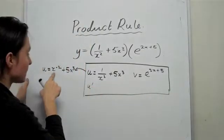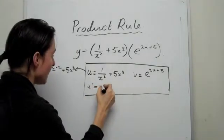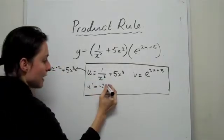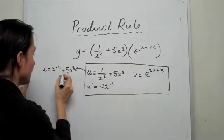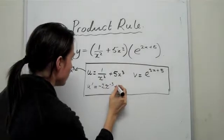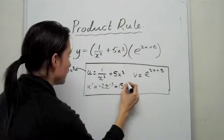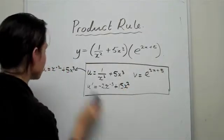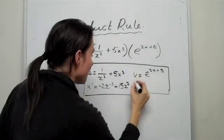So U dash is going to be the derivative of this stuff. So it's going to become minus 2, minus 2X to the minus 3, because you've reduced it by 1. And then you have plus 15X, reduce that by 1, so it becomes 2. All right, and now this is going to be annoying me.